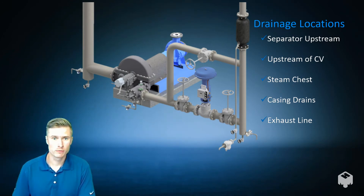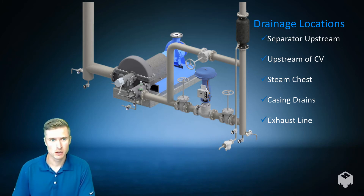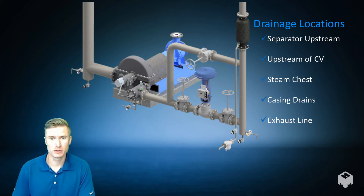Here is an overview of the drainage locations that must be considered around a turbine. First is the upstream separator. Second is upstream of the control valve. Next are the drain points on the trip and throttle valve, also called the steam chest, followed by the turbine body or case drains. In some instances there are drain points on both the high and low pressure side of the casing. And last is on the exhaust line.